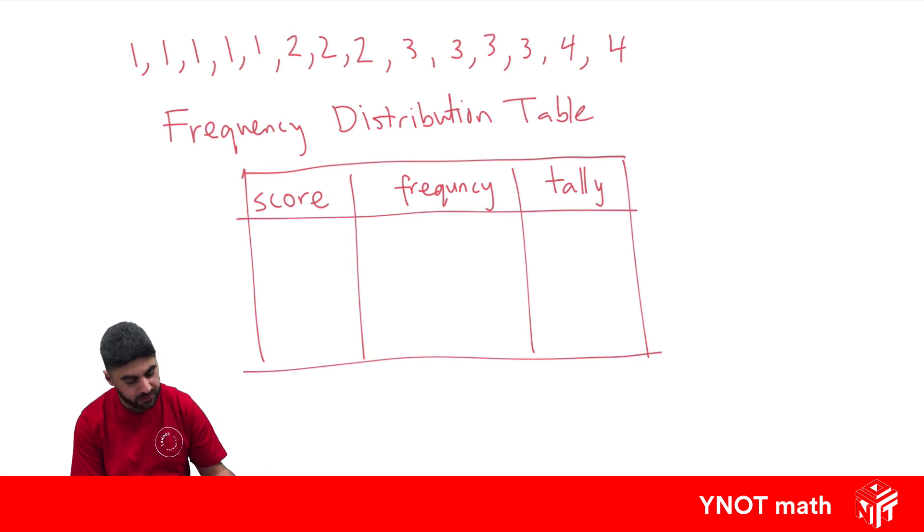So our scores, our different scores - well, we've got ones, we've got twos, threes, and fours. So that's what's going to go in our score column: one, two, three, and four.